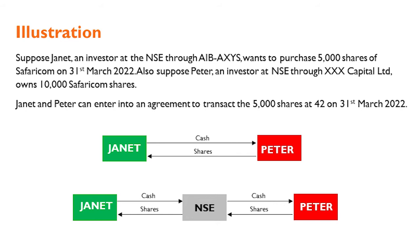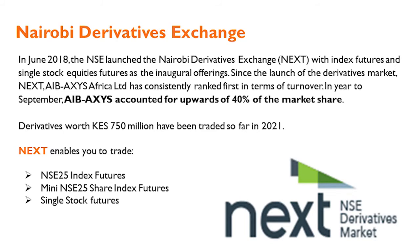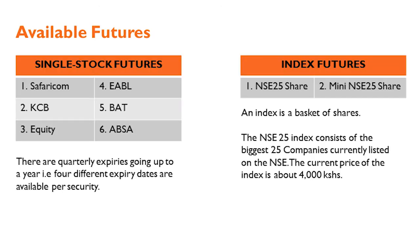For our case the underlying asset will be the single stock futures, the index futures, and the mini index futures. In our example from last week, we had Janet who wanted to purchase 5,000 shares of Safaricom in March 2022, and Peter, an investor at NSE through Triple X Capital, who currently owns 10,000 shares of Safaricom. We illustrated how the two of them may be able to transact either directly or through the exchange — the derivatives exchange is called NEXT, and it's a fully owned subsidiary of the NSE.